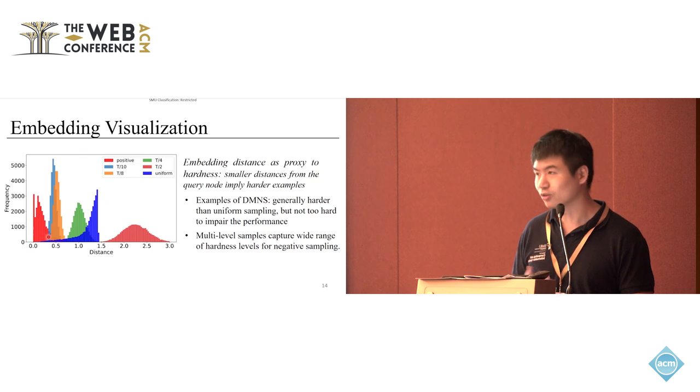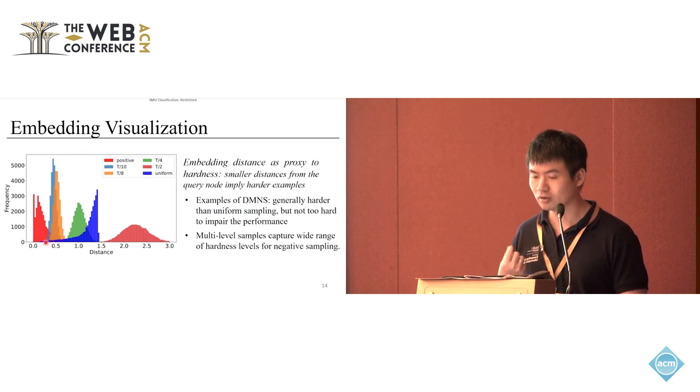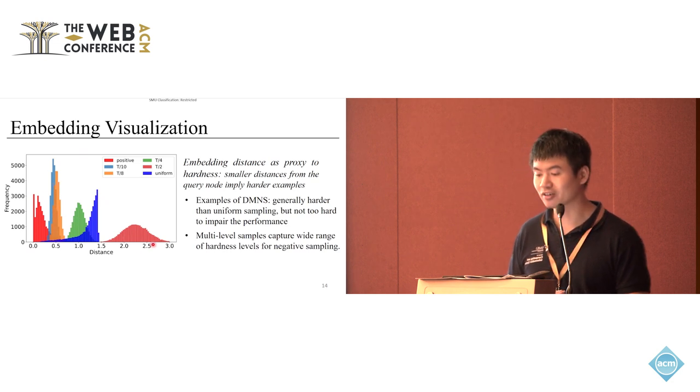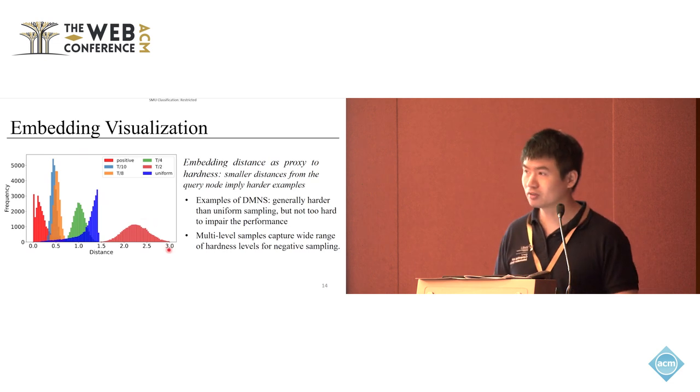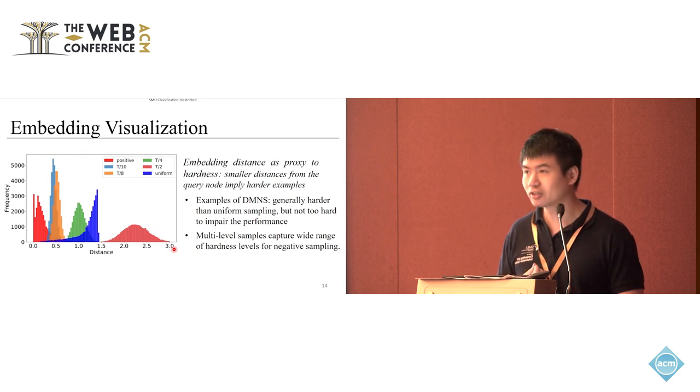Then the blue, orange, green, and brown colors here are actually negative samples of different difficulty levels. They are generated by our diffusion model at different time steps. As you can see, those with different time steps have different distances to the positive nodes or to the query nodes. The x-axis is actually the distance. You can see if the time step is smaller, like t over 10, this blue bar is very close to the query node.